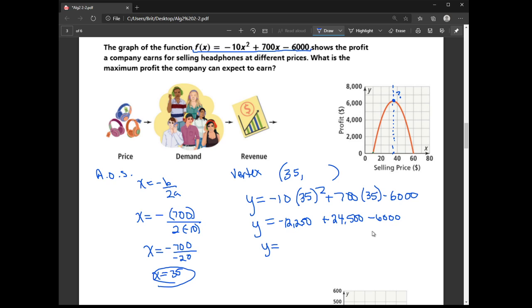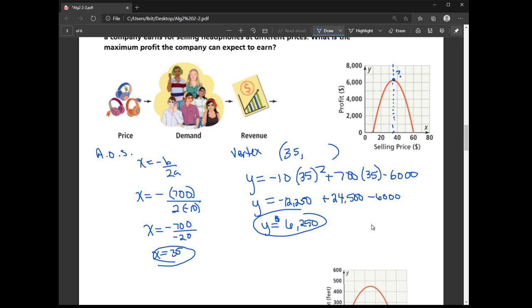I get 6,250 bucks. All right, so let's change colors. If the company sells the headphones for $35 a piece, they will make a maximum of 6,250 bucks.